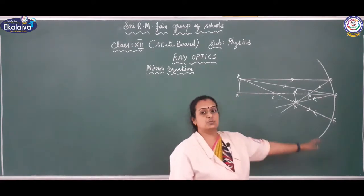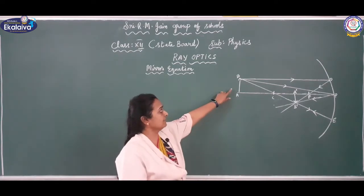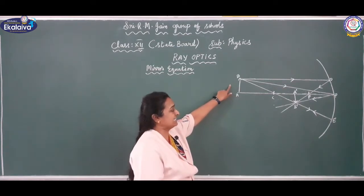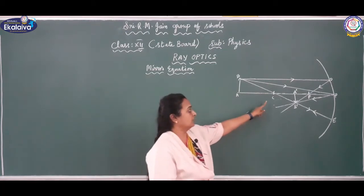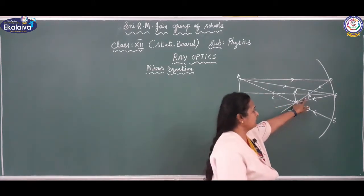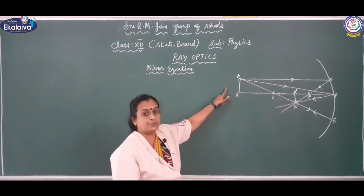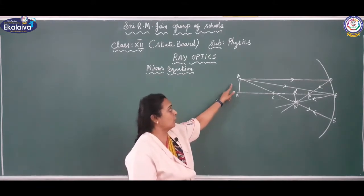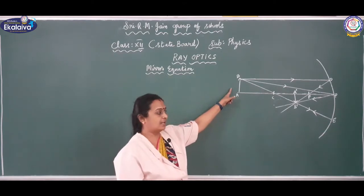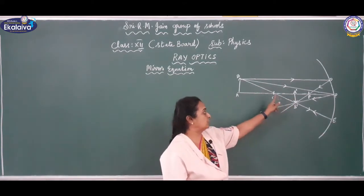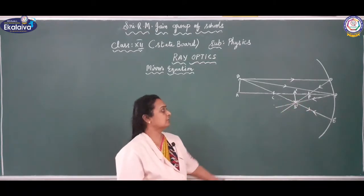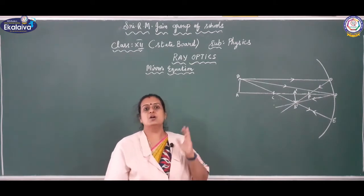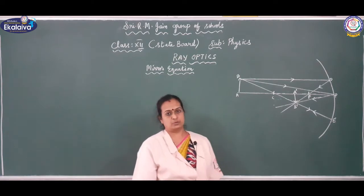This is with respect to a concave mirror. Here is object AB, kept beyond C — the center of curvature — and here is the principal focus F. So if the object is beyond C, the image will be formed between C and F. Let us derive an equation relating object distance, image distance, and focal length.